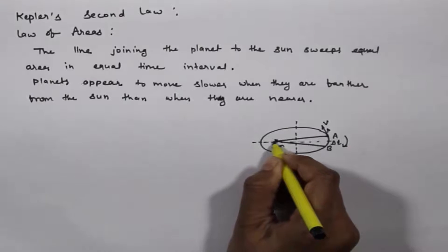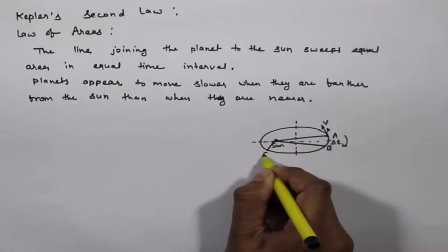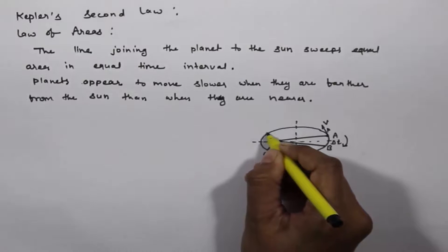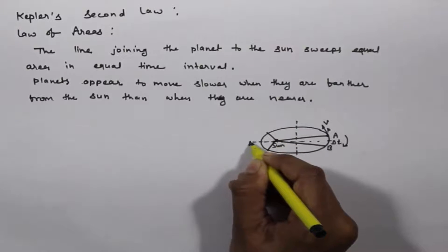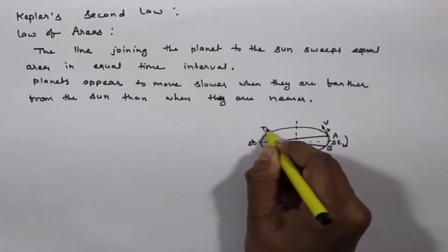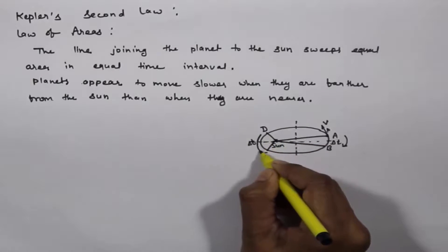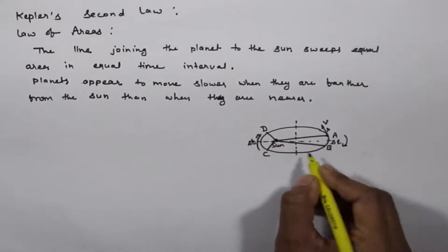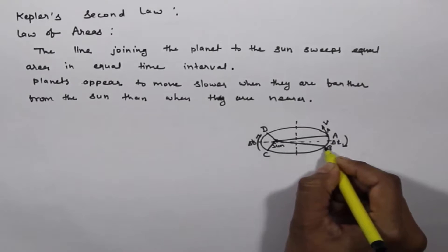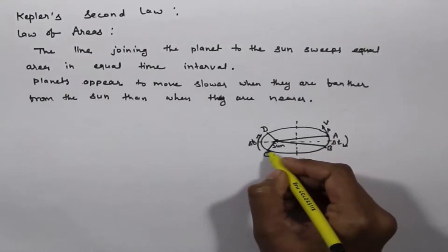If a planet is at position C, then after the same time interval del T, it is at D. The distance A to B is shorter than the distance C to D.